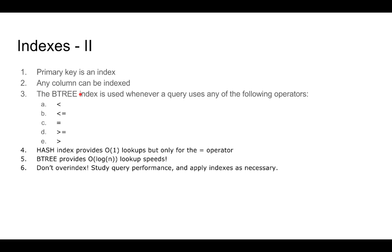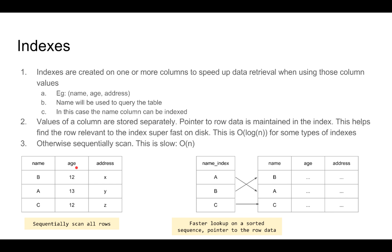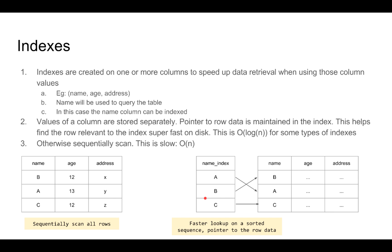A binary tree index is an index that uses the binary search algorithm to search for values. A binary tree index is very handy whenever a query uses the less than, greater than, or equal to operator. For example, if you are searching for all values less than b, the binary tree index is very good at finding values less than a particular value because of the search algorithm and data structure. A binary tree index provides O(log n) lookup speeds. To give you an idea of what this means: without an index on a table with 10,000 rows, a search would take 10,000 operations. With a binary tree index, we are looking at only log base 2 of 10,000, which equals 13 operations — down from 10,000 to 13.